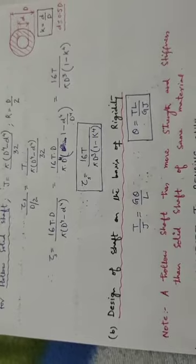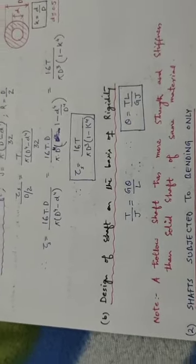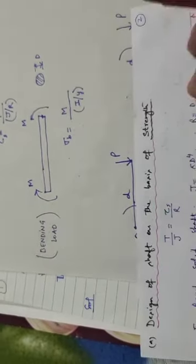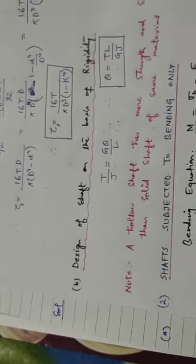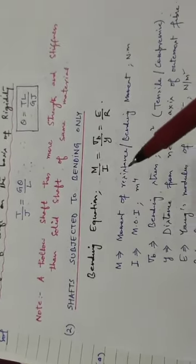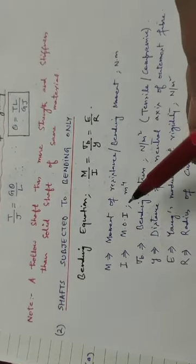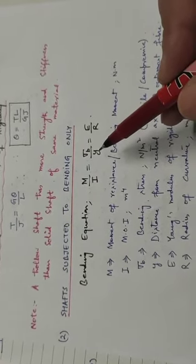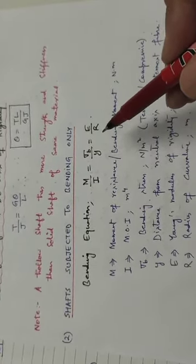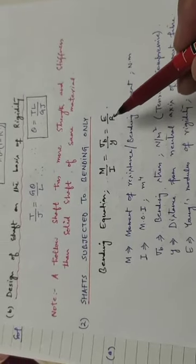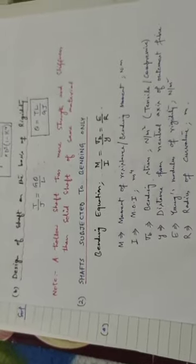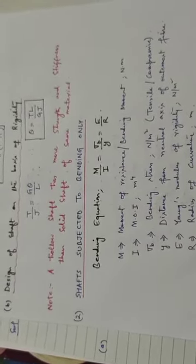Next is the design of a shaft subjected to bending only. We use the bending equation: M/I = σ_B/Y = E/R, where M is the bending moment, I is the moment of inertia, sigma_B is the bending stress, Y is the distance of the outer fiber from the neutral axis, E is Young's modulus of elasticity, and R is the radius of curvature.